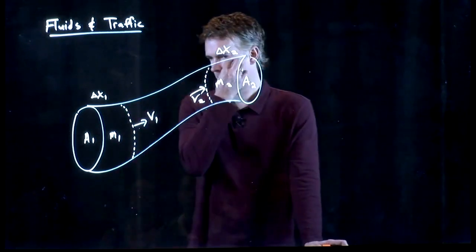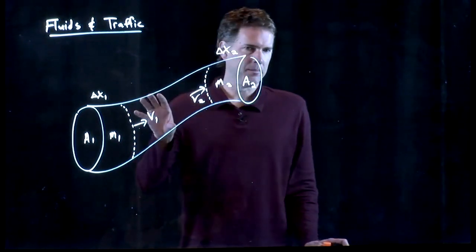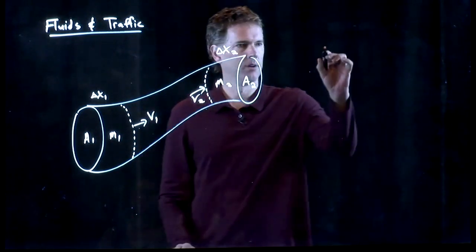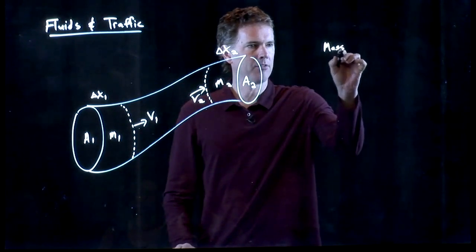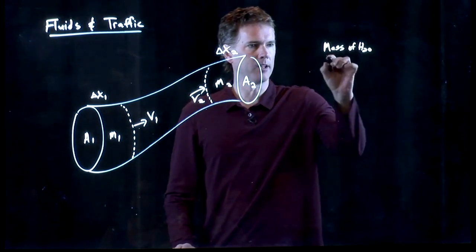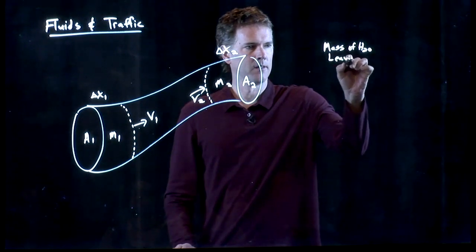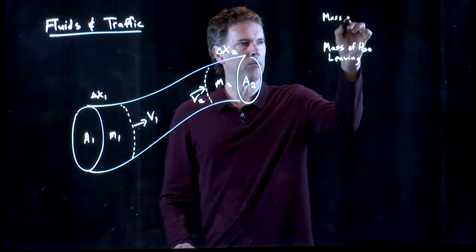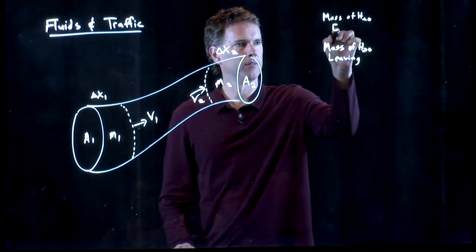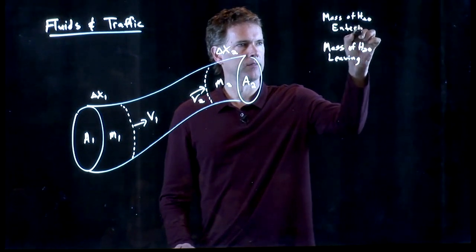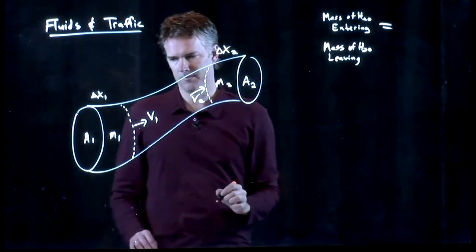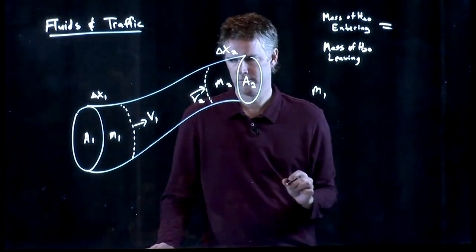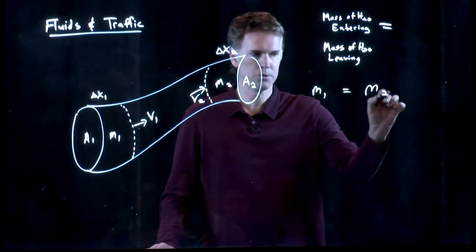What can we say? Well, let's say there's no holes in the pipe anywhere, so water doesn't leak out, and there's no extra water coming into the pipe. And so the mass of water leaving has to equal the mass of water entering. The mass of water entering is M1, the mass of water leaving is M2.